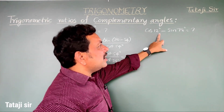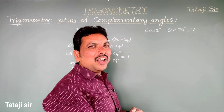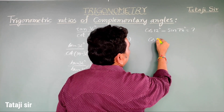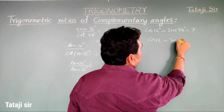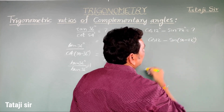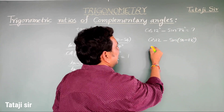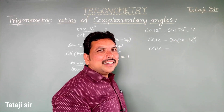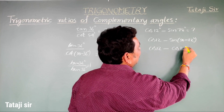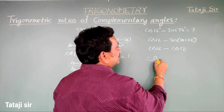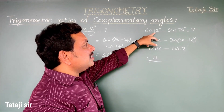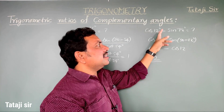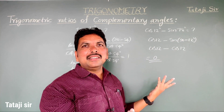Example 2: cos 12° minus sin 78°. Since 12 plus 78 equals 90 degrees, sin 78° equals sin(90°−12°) equals cos 12°. So the expression becomes cos 12° minus cos 12°, which equals 0. Alternatively, convert cos 12° to sin(90°−12°) = sin 78°, and sin 78° minus sin 78° equals 0.